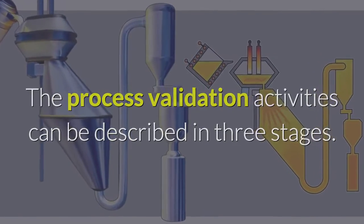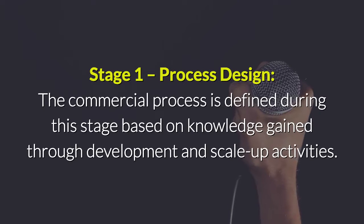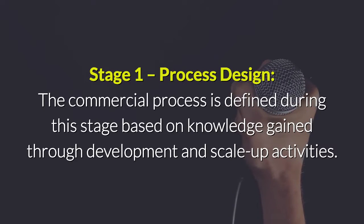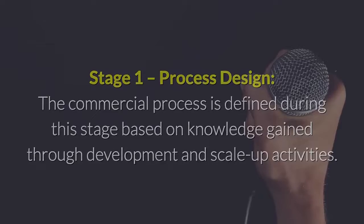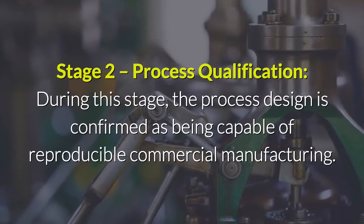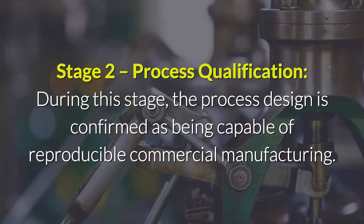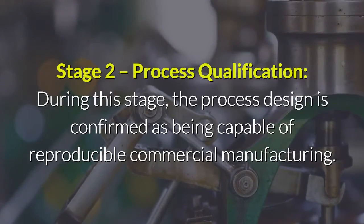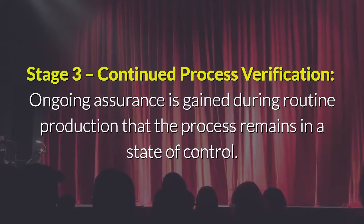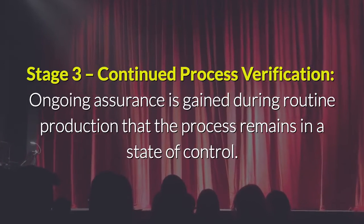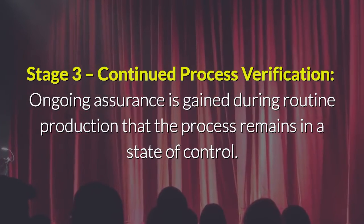Process validation activities can be described in three stages. Stage one: Process Design — the commercial process is defined during this stage based on knowledge gained through development and scale-up activities. Stage two: Process Qualification — the process design is confirmed as being capable of reproducible commercial manufacturing. Stage three: Continued Process Verification — ongoing assurance is gained during routine production that the process remains in a state of control.